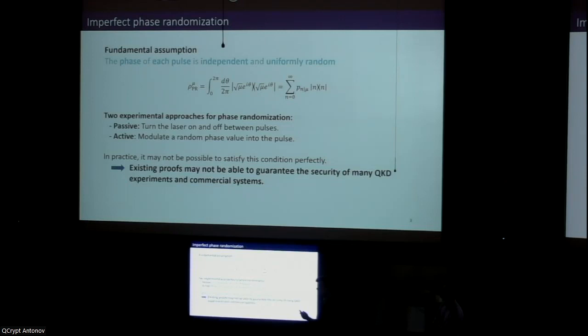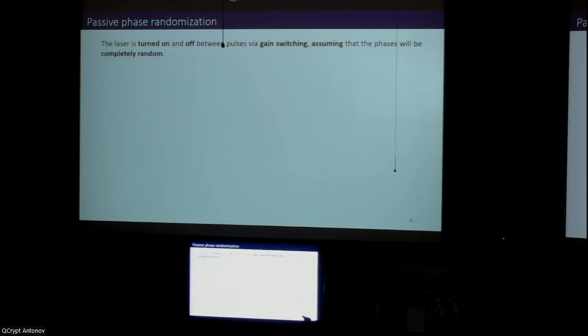This means that existing decoy state security proofs may not be able to guarantee the security of many QKD experiments and commercial systems available today. Recently, we have tackled this problem by developing two security analyses that can guarantee security with imperfections in the phase randomization process: one that targets passive systems and one that targets active systems. First, I will present our result for passive systems.